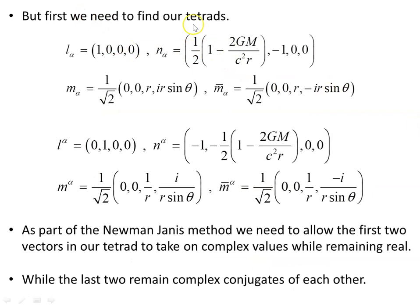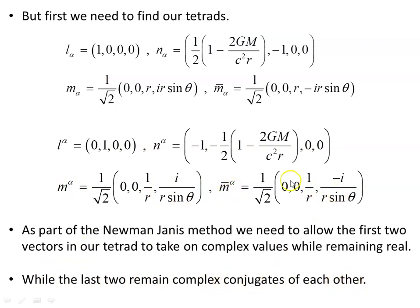First we need to find our tetrads. A previous video showed all the steps for producing the tetrad components — both covariant and contravariant forms. As part of the Newman-Janis method, we allow the first two vectors in our tetrad, l and n, to take on complex values while keeping the physical result real. The last two vectors, m_α and m-bar_α, remain complex conjugates of each other.